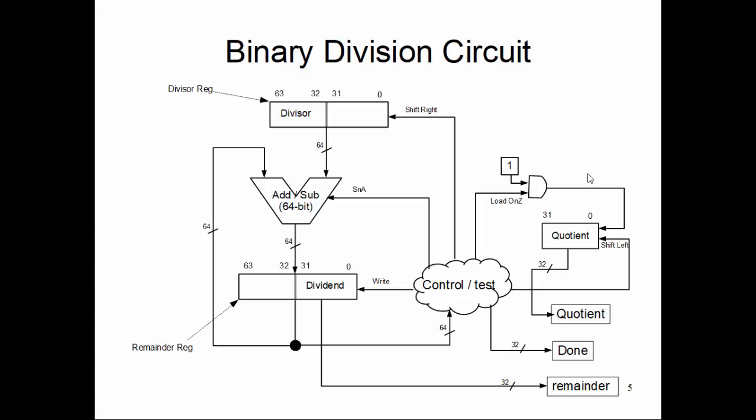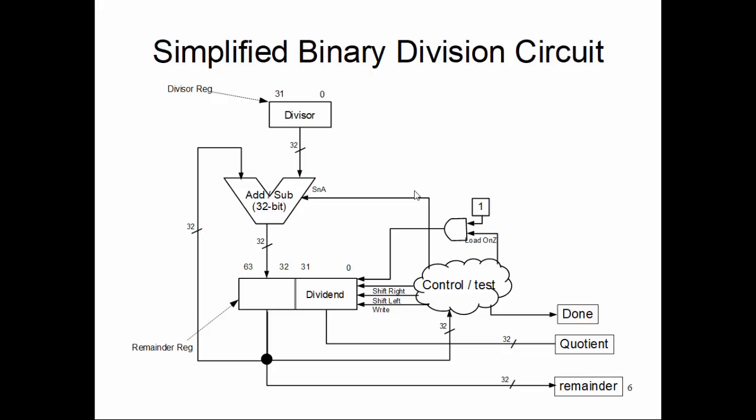As we did in the case of the multiplier, we ask ourselves: do we need this much hardware? A 64-bit adder/subtractor is definitely a problem — it's a huge circuit to deploy. There are also a lot of 64-bit registers, which are expensive components. So can we do better? Can we use a 32-bit adder/subtractor and more 32-bit registers, using 64-bit registers only if absolutely needed? Yes, we can.